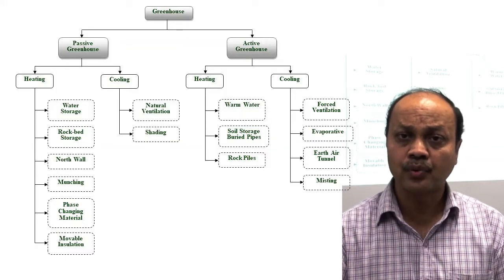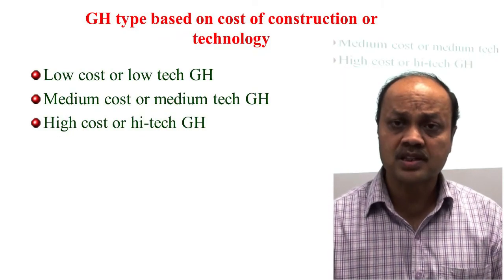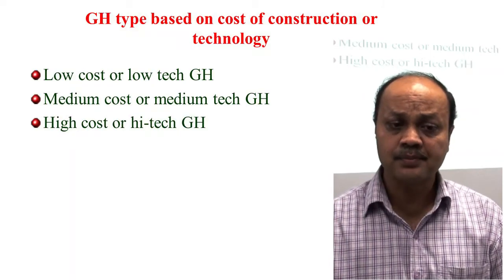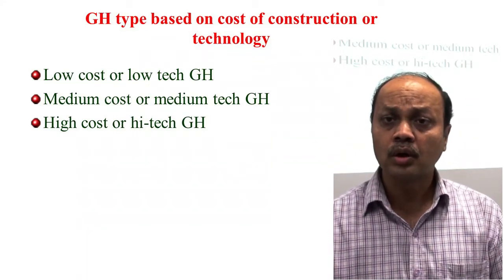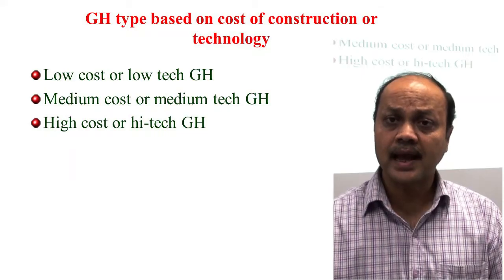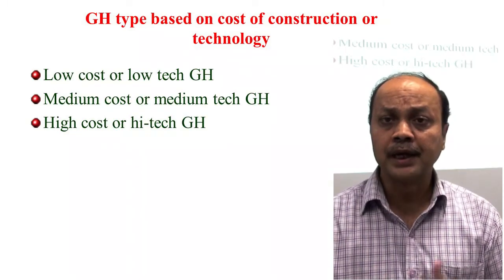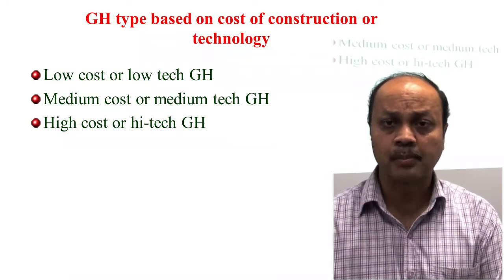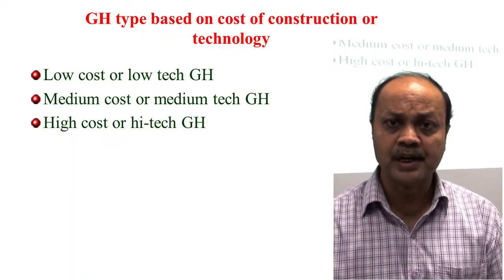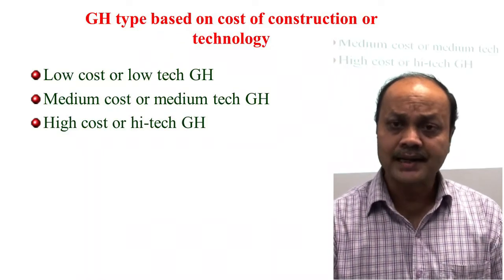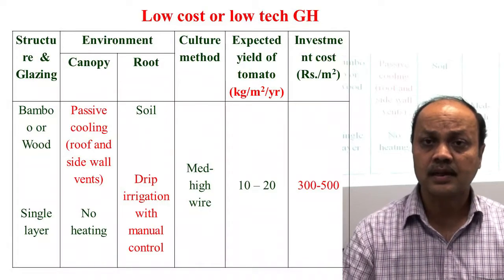Based on the cost of construction, greenhouses can be broadly classified into three types: low cost or low technology, medium cost or medium technology, and high cost or high technology. If the cost of construction is low, technology involvement will be very less. As cost increases, more technology is used for improving heating, cooling, CO2 levels, and other parameters.